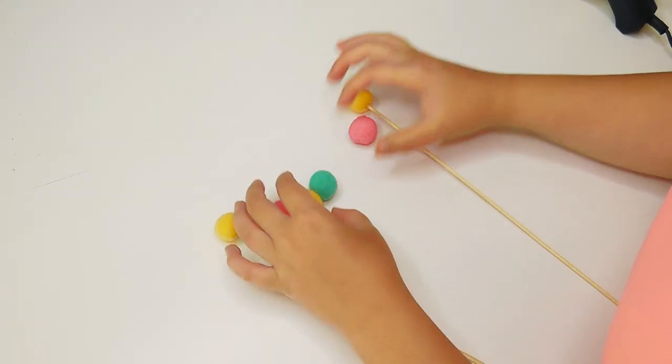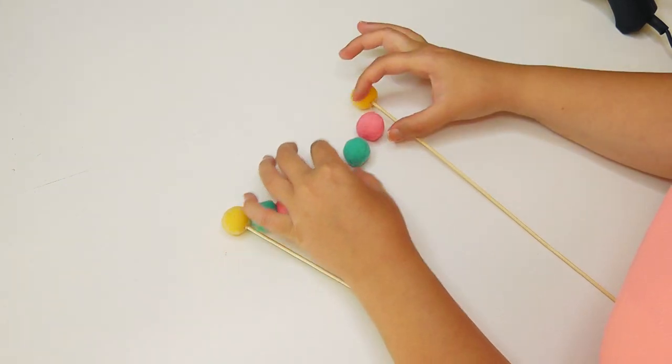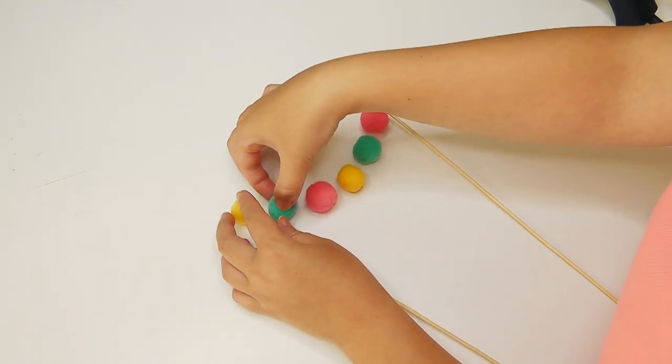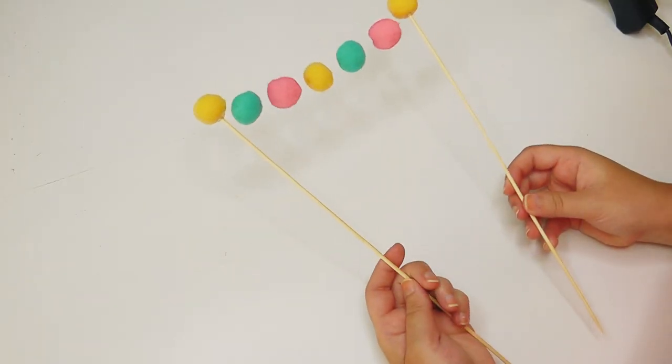Then you just want to space out the pom poms so that they are even. And that's it, a mega quick cake topper.